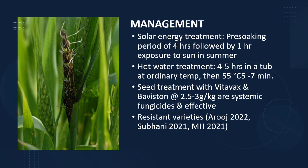For disease management, solar energy treatment — soaking for four hours followed by one hour of sun exposure — is effective in summer. Hot water treatment involves soaking four to five hours at room temperature, then raising the temperature to 55 degrees centigrade for five to seven minutes. Seed treatment can also be done with Vitavax and Bavistin at the rate of 2.5 to 3 grams per kg of seed — these are systemic fungicides that kill the pathogen inside the seed. Resistant varieties like Rohini, Suhani, and MH-21 can also be grown.